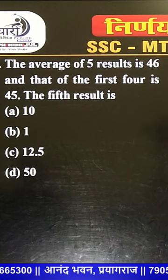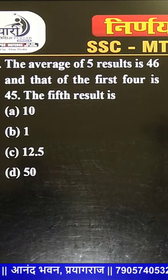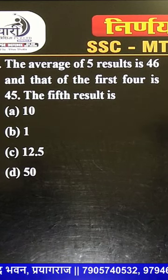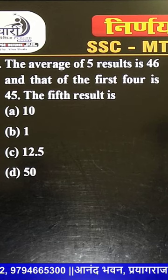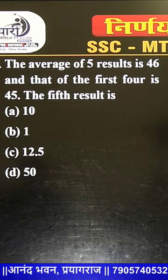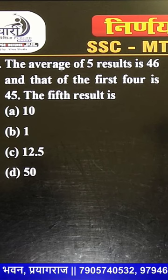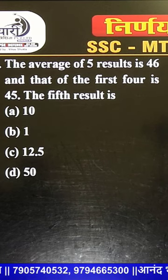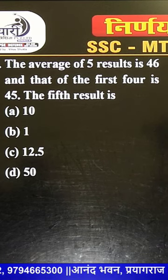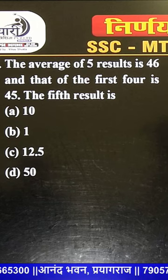Look at this question in front of you. On average, 5 numbers are 46. 5 numbers are 46, and what is the first number of 4? The first number of 4 is 45 — then what will 5 numbers be?